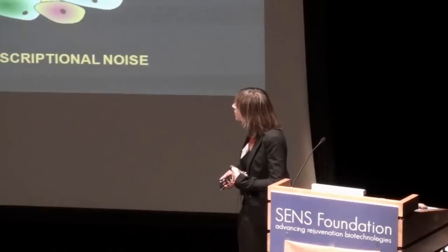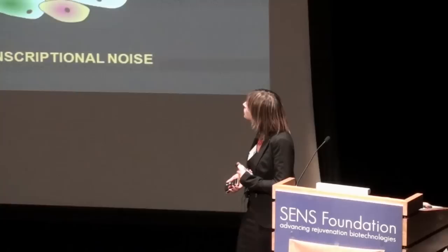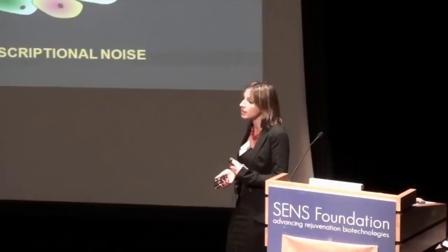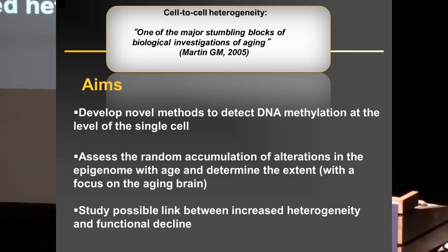While systematic changes can be studied with commonly available techniques, to study the stochastic ones we really need to look at DNA methylation patterns at the level of single cells. This has been a major challenge. In fact, cell-to-cell heterogeneity has been defined as one of the major stumbling blocks of the biological investigation of aging.